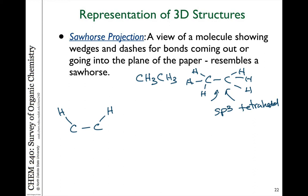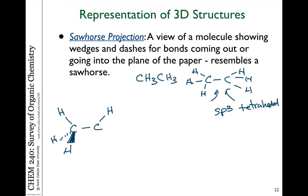To complete the tetrahedron, one bond must come out of the paper toward you, represented by a bold wedge, and the third bond goes back away from us past the plane of the paper, shown as a dashed line. We do this for both carbons. The result looks like a sawhorse — hence the name 'sawhorse projection.' This gives a better picture of the three-dimensionality of the molecule.